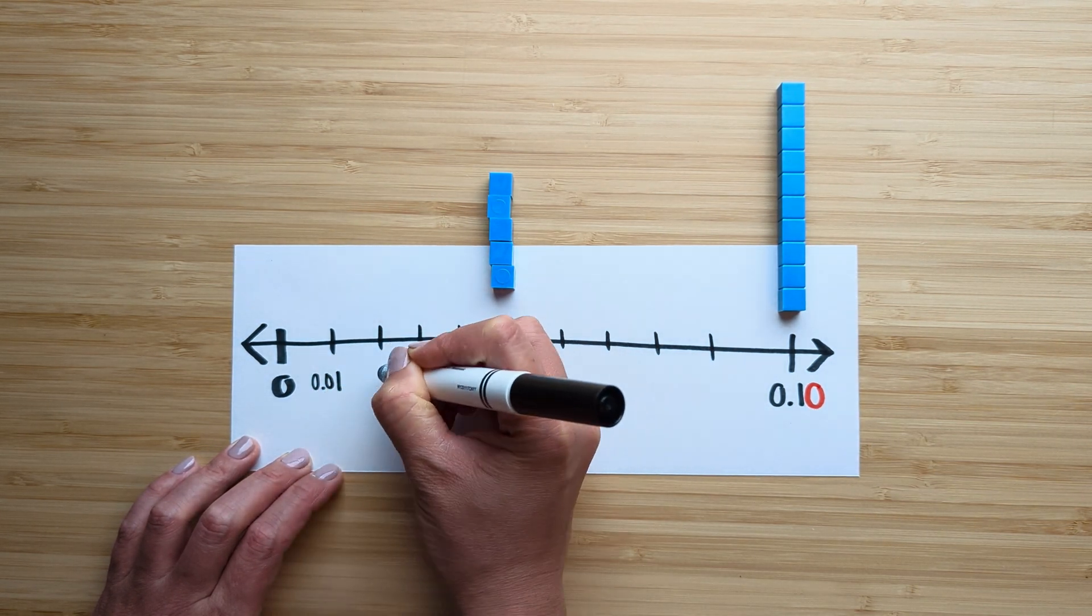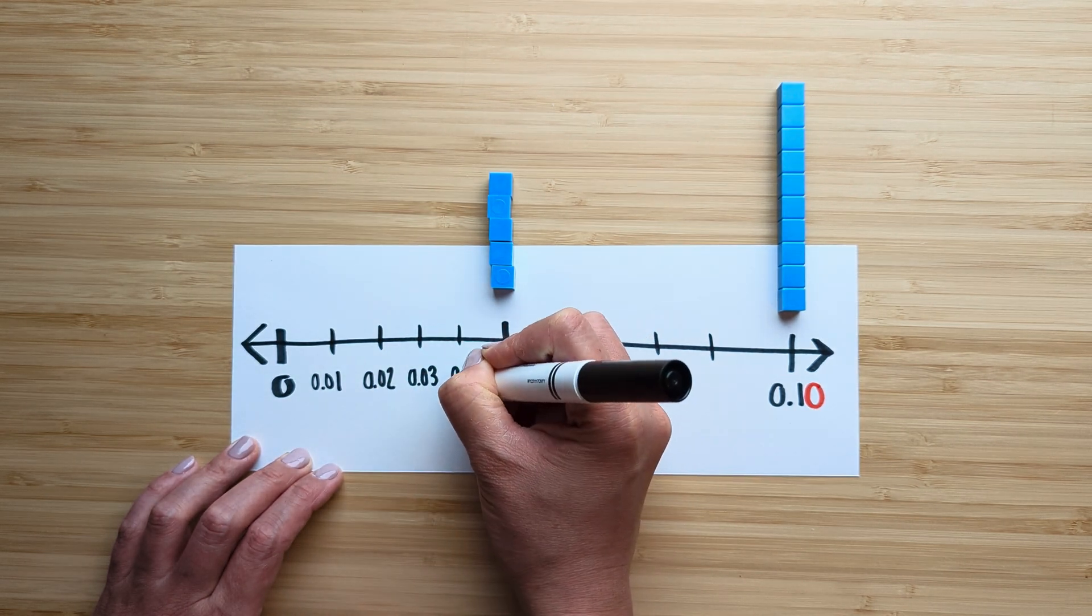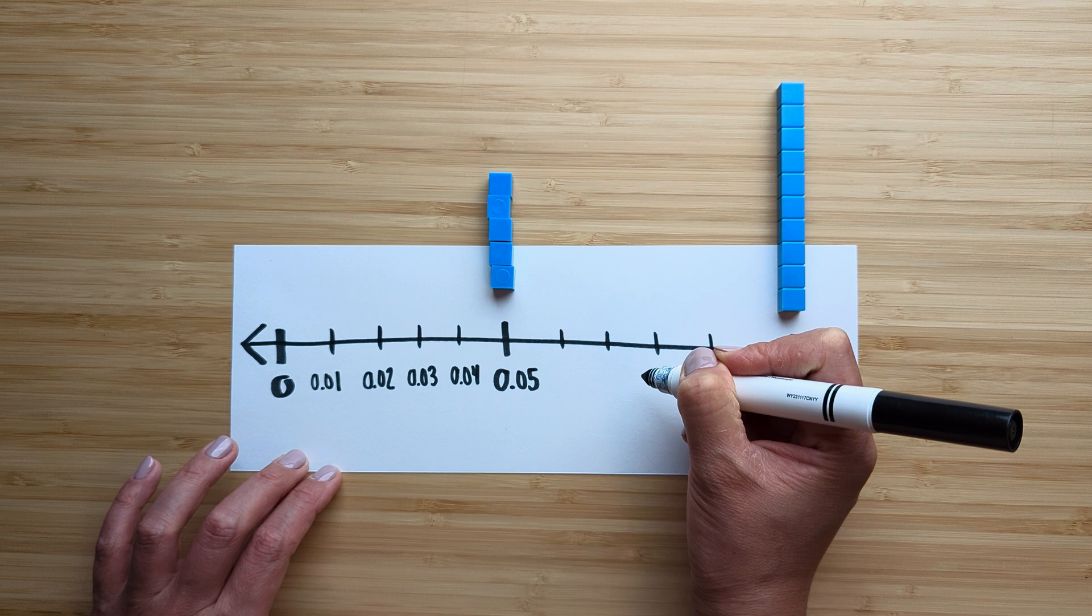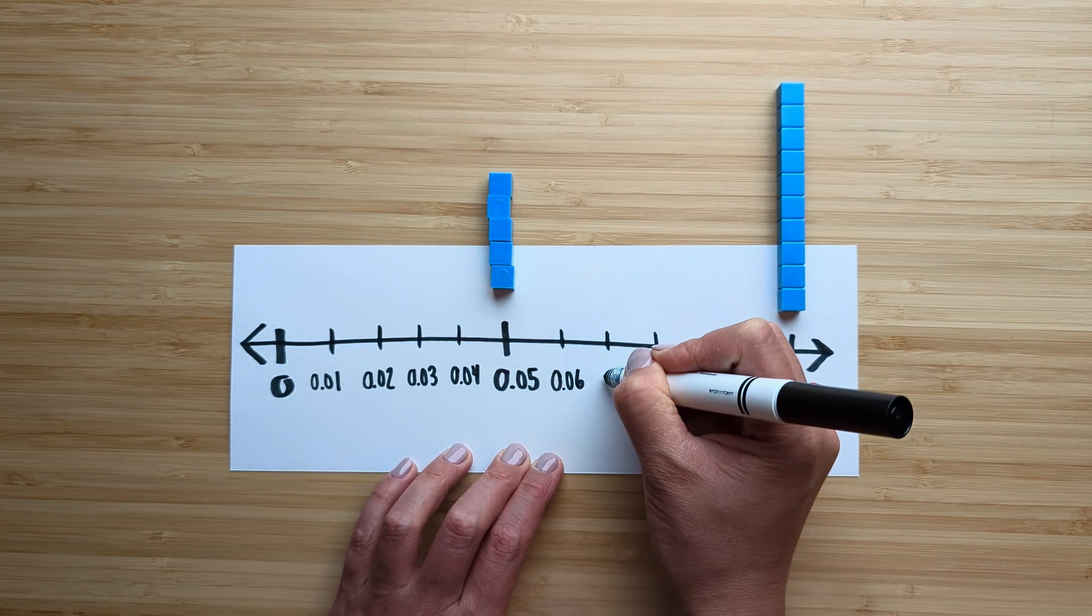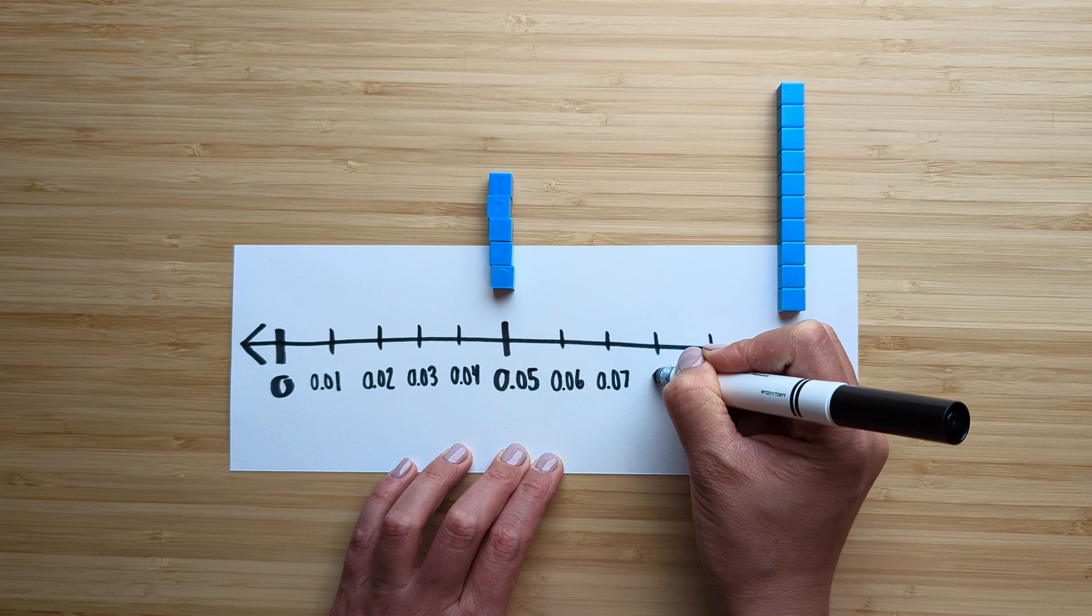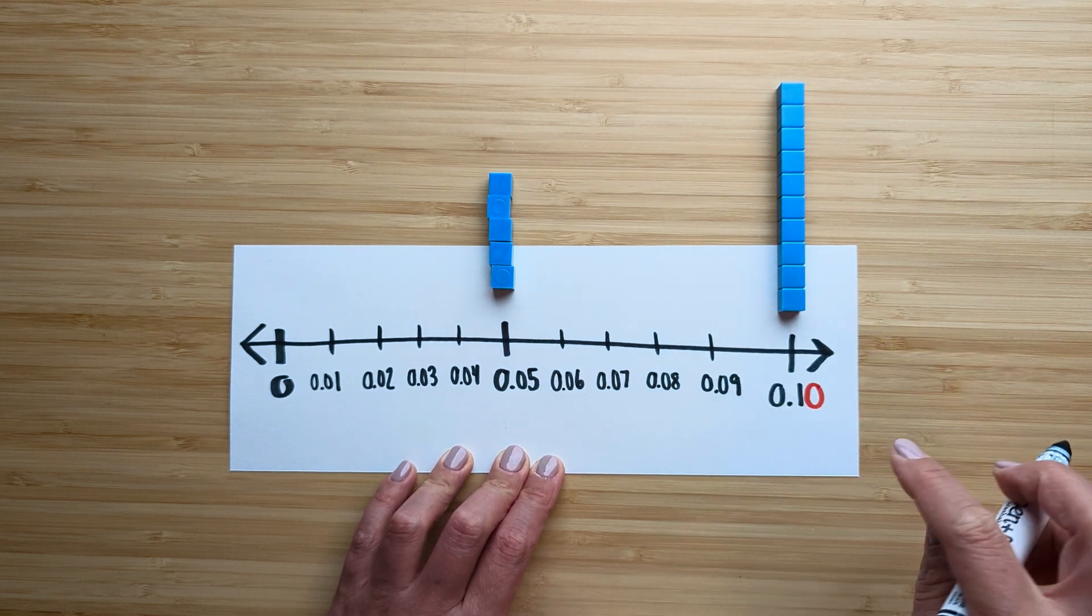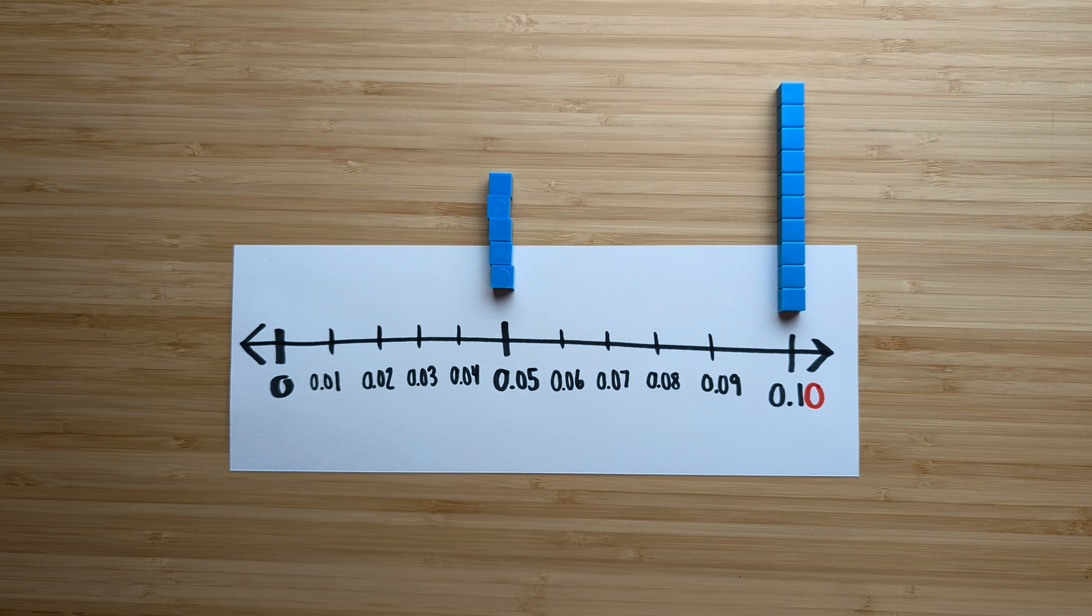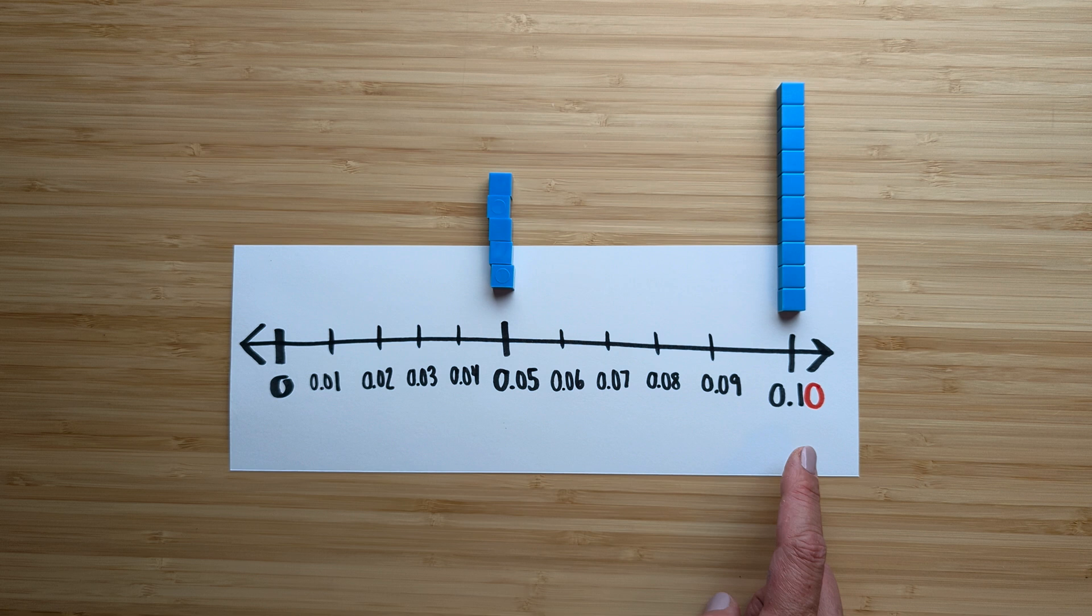This is one hundredth, two hundredths, three hundredths, four hundredths, five hundredths, six hundredths, seven hundredths, eight hundredths, and nine hundredths. So this is a great visual to see how the number line can be created using the hundredths and then the tenth or ten hundredths.